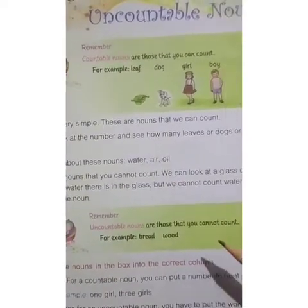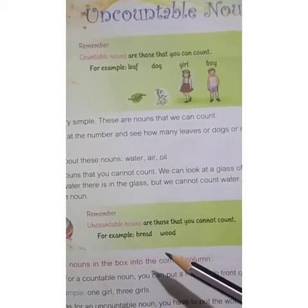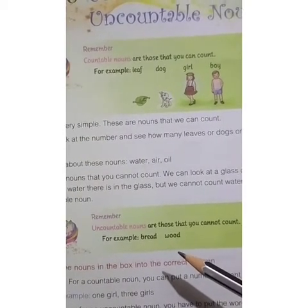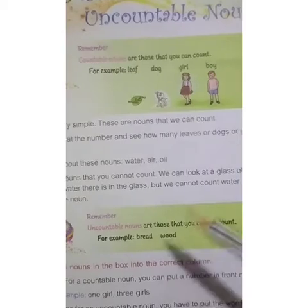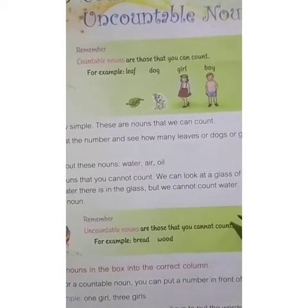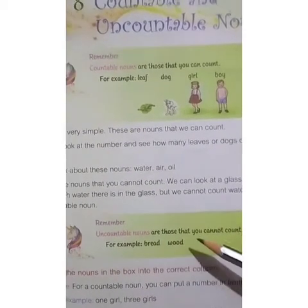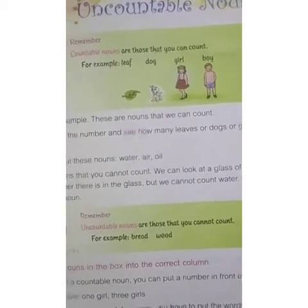So what are uncountable nouns? Uncountable nouns are those that we cannot count. For example: bread, wood, water, air, oil.